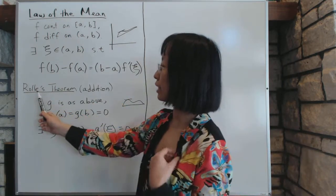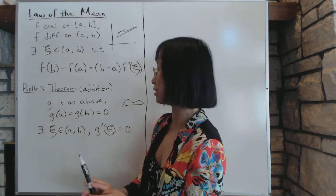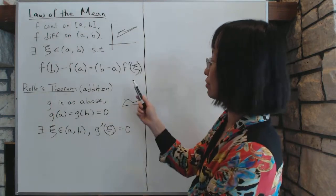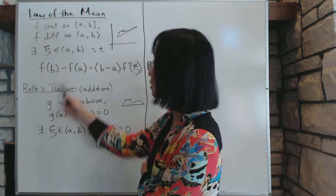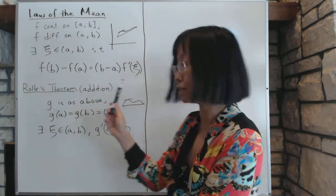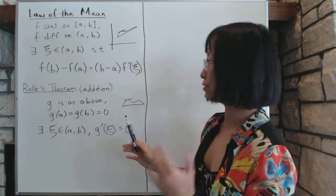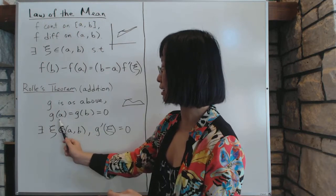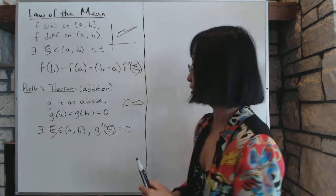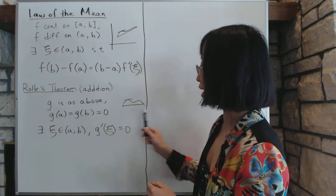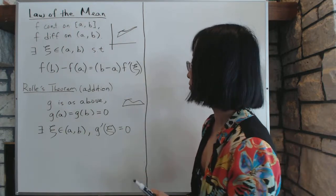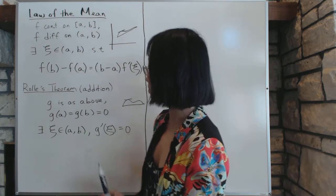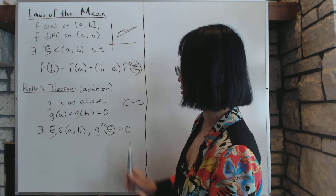Now related to the law of the mean is something called Rolle's theorem. Rolle's theorem is a simplified version of the law of the mean. It goes like this: g has the same conditions as the f function, continuous on the closed interval, differentiable on the open interval. But there is one more condition that is g(a) and g(b) equal to zero. So g is conveniently nailed down on both ends, slammed down to zero. Now if this is true, then there exists a ξ inside (a,b) such that g'(ξ) = 0.